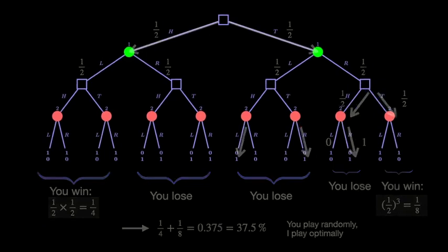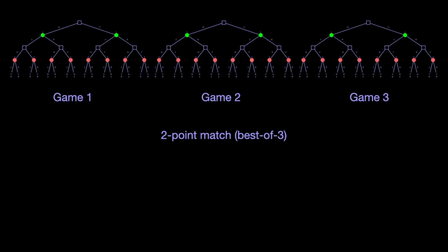Are we finished? Not yet. A backgammon competition between two players consists of several games, which is somewhat similar to volleyball and tennis. As an example, let's focus on a two-point or best-of-three match in which the first player who wins two points wins the competition.